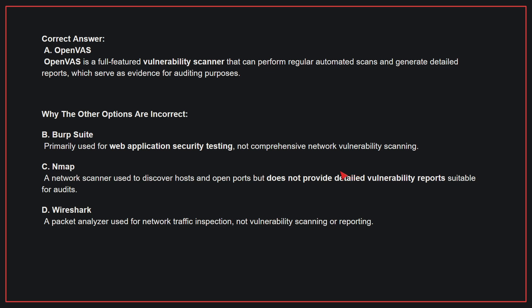Why the other options are incorrect: B — Burp Suite. This is primarily used for web application security testing, not comprehensive network vulnerability scanning. C — Nmap. A network scanner used to discover hosts and open ports but does not provide detailed vulnerability reports suitable for audits. D — Wireshark. A packet analyzer used for network traffic inspection, not vulnerability scanning or reporting. Therefore, the correct answer is A.